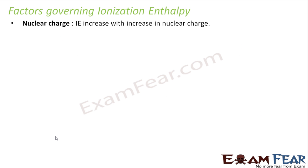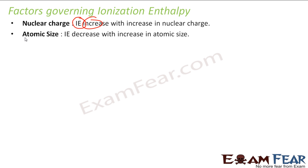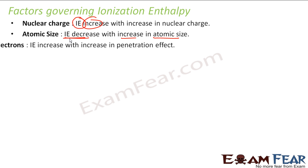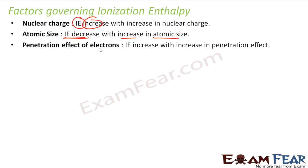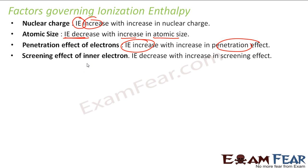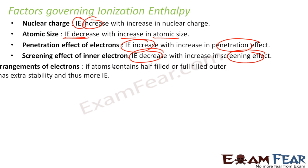There are various factors governing ionization enthalpy: one is nuclear charge — the more the nuclear charge, the more tightly the nucleus holds a particular electron, so ionization energy increases. Atomic size — the bigger the size, the lesser the control of nucleus on the electron, so the electron can easily come out, meaning lesser ionization energy. Penetration effect of electron — the more the penetration effect, the more the ionization energy. Screening or shielding effect — increasing shielding effect means lesser ionization energy, because the outermost electrons experience a lesser effective nuclear charge.